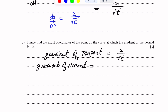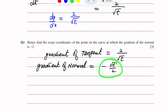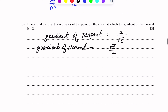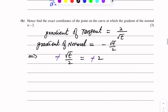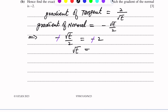Now part b of this question: hence find the exact coordinates of the point on the curve at which the gradient of the normal is negative 2. The gradient of the normal is negative 2. Note that dy over dx which we just found is the gradient of the tangent, so the gradient of the tangent is 2 over square root t.